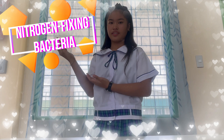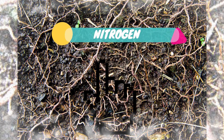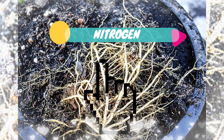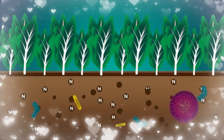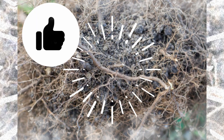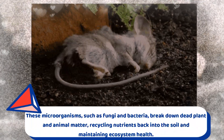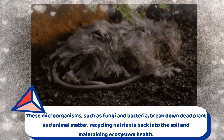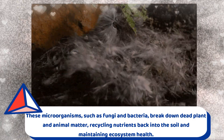Nitrogen-fixing bacteria convert atmospheric nitrogen into a form that plants can use, which helps plants grow and improve soil fertility. Decomposers, such as fungi and bacteria, break down dead plant and animal matter, recycling nutrients back into the soil and maintaining ecosystem health.